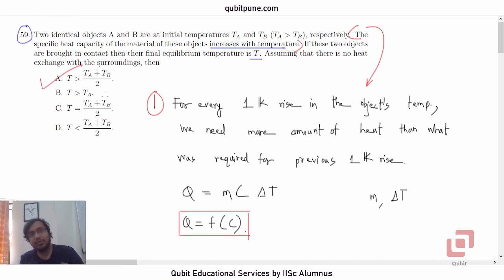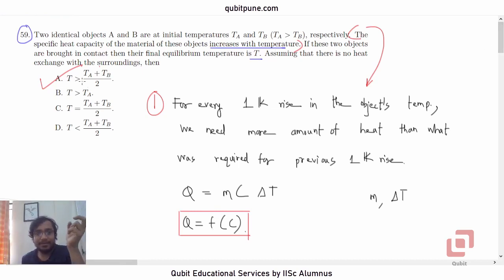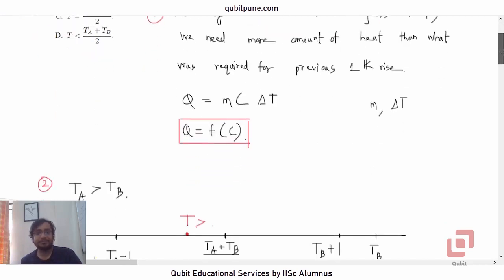This is a qualitative description because we do not know exactly how specific heat increases with temperature — we do not know the actual function. Therefore, we cannot find an exact value for T and have to express the answer in terms of inequalities.